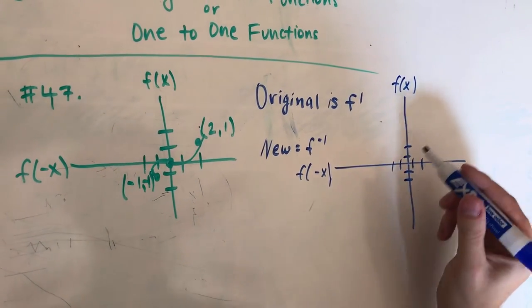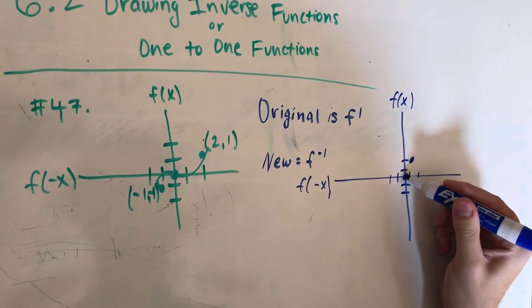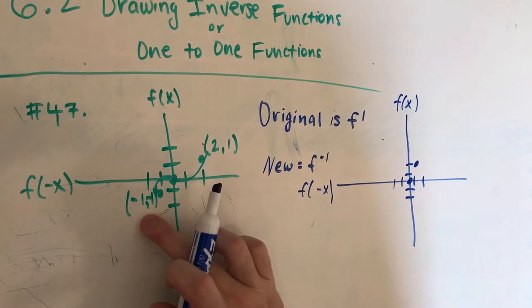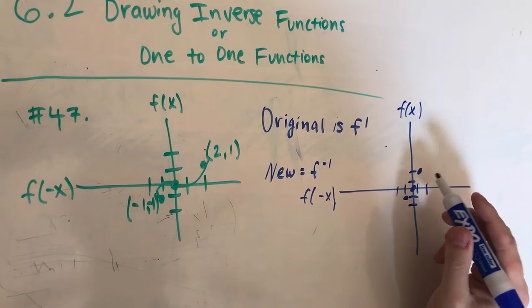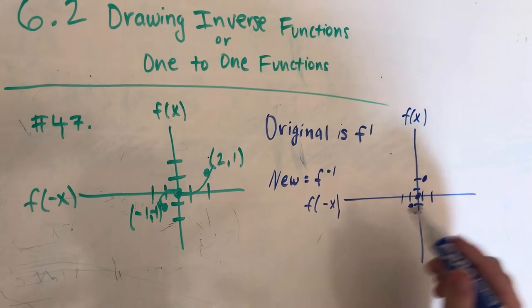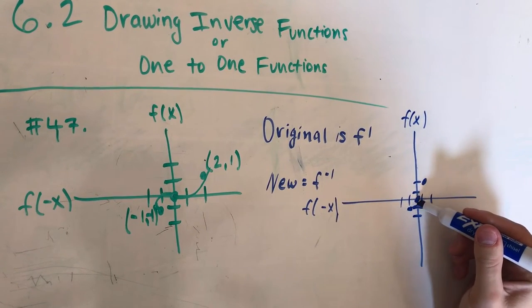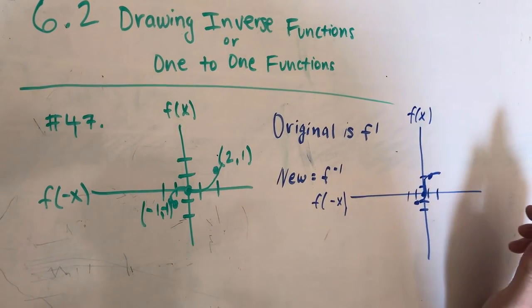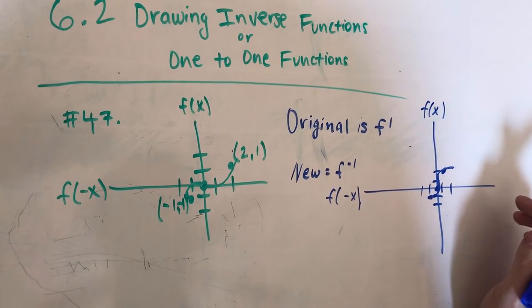So we're actually going to have 1 and 2 right here. We're going to keep our 0, 0 because if you inverse that, it'll stay there. And if you flip negative 1 and 1, you're going to get negative 1 and 1 again. But the catch is we're actually going to switch the direction the line is going — we're going to go up like this and curve that way because that's pretty much the opposite. And that's the answer, essentially.